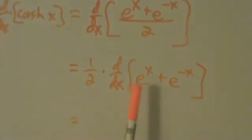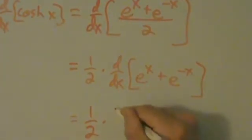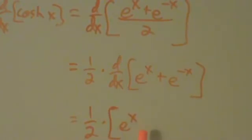Now we differentiate term by term. So the one half is still there. Now we have d/dx of the first term, d/dx of e to the x, we know is just e to the x.